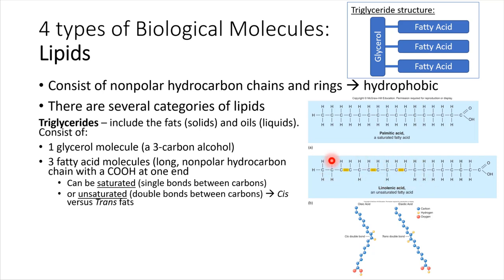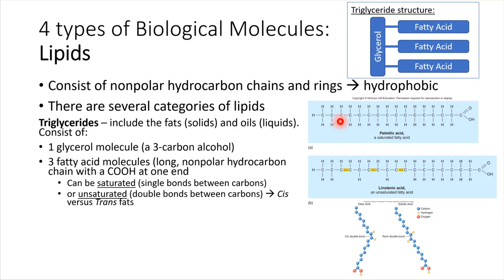The fact that there are double bonds present tends to lead to bends in the chain. So instead of being a straight chain, there might be a spot where it bends. Consequently, if you imagine a whole bunch of these chains packed up against each other, they're simply not going to pack very well. And so unsaturated fats tend to be liquid more so than saturated fats.